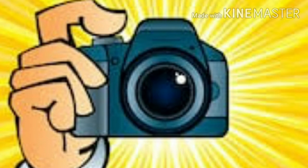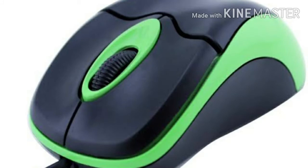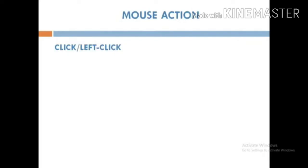Mouse also has the same function — clicking. Just like we click to take a photo with a camera, the mouse also has two buttons — left button and right button — and when we press them, we are clicking. Today we will learn mouse actions: click and left click.